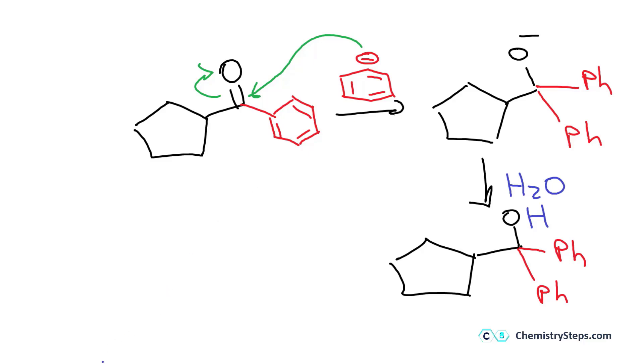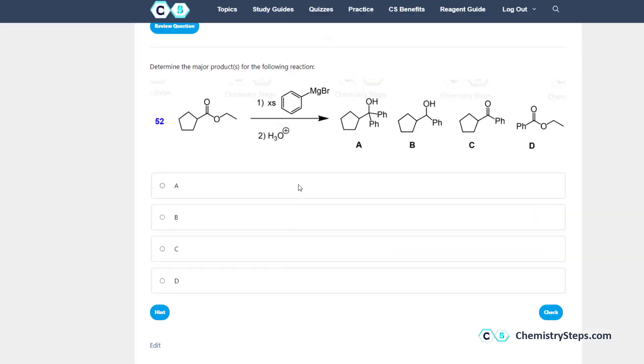Okay, so that's the reaction of the Grignard with esters. So remember, we have two additions there, and turning the esters into tertiary alcohol. Therefore, that's going to be option A.